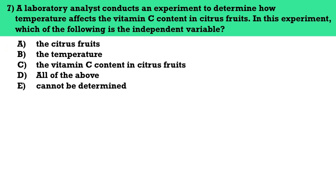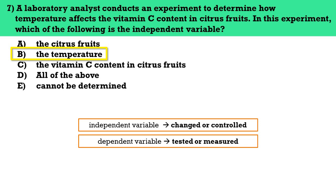Number seven, a laboratory analyst conducts an experiment to determine how temperature affects the vitamin C content in citrus fruits. In this experiment, which of the following is the independent variable? The answer here is letter B. In a scientific experiment, there are two types of variables: the independent variable and the dependent variable. The independent variable is the one that is changed or controlled and is assumed to have a direct effect on the dependent variable, while the dependent variable is the one that is tested or measured. In this experiment, the independent variable is the temperature, and the dependent variable is the vitamin C content in citrus fruits.